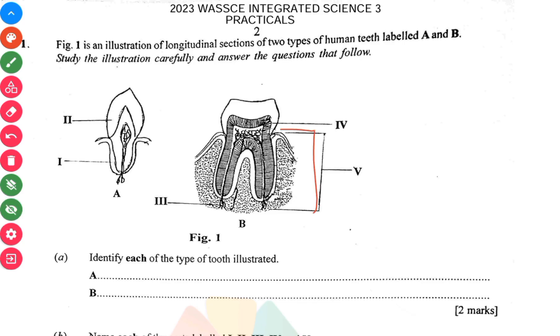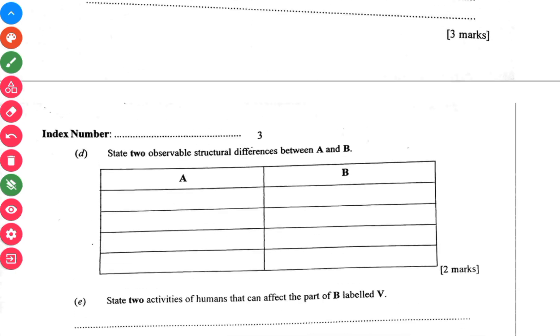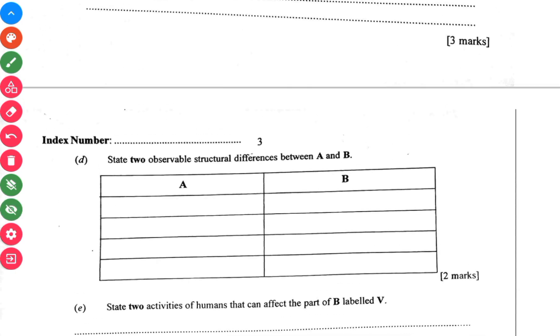State two observable structural differences between A and B. Observable means what can you see. One, the canine is smaller, also the molar is bigger. Then the next one is the canine has a pointed enamel but the molar has a wide surface for chewing and grinding food.